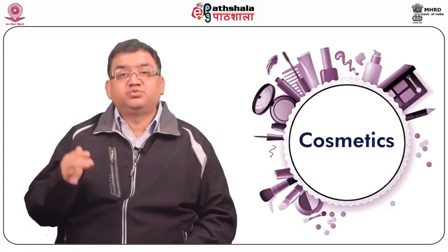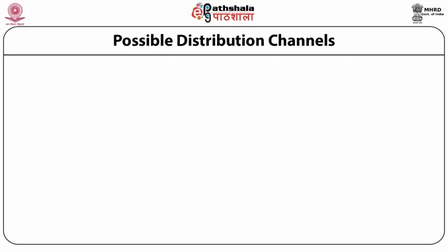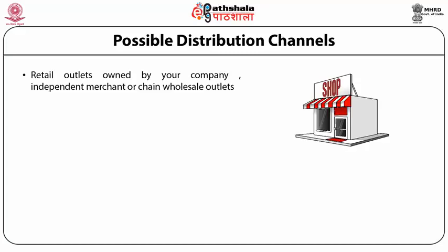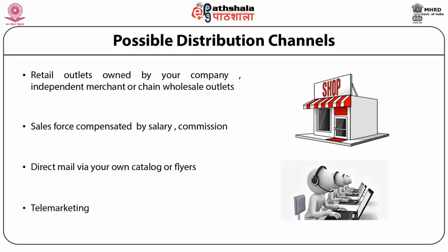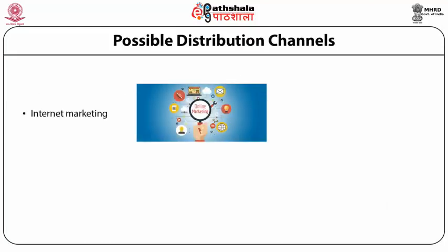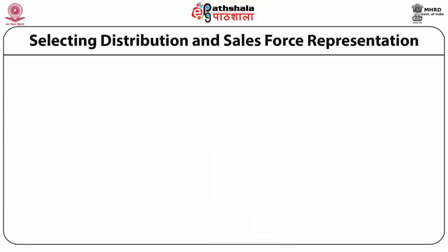In addition, pricing levels should provide acceptable company revenues and profit margins. There are many possible distribution channels, which include retail outlets owned by your company or by an independent merchant or chain, wholesale outlets of your own or those of independent distributors or brokers, a sales force compensated by salary, commission, or both, direct mail via your own catalog or flyers, telemarketing on your own or through a contract firm, internet marketing — selling your products online — and TV and cable direct marketing and home shopping channels.